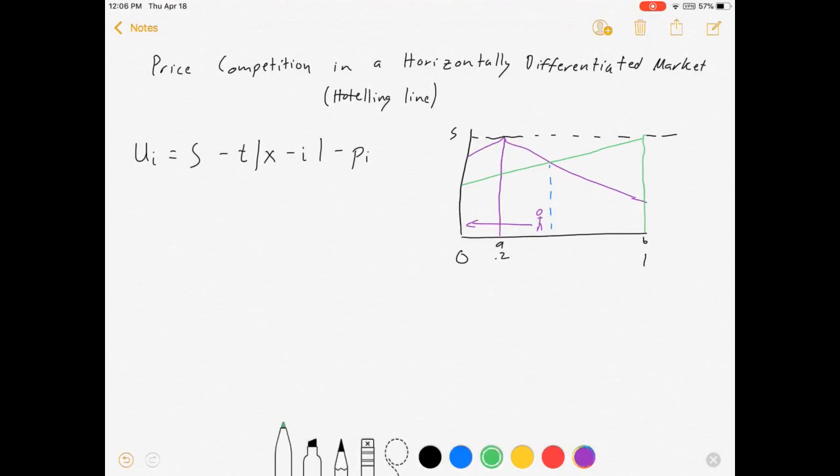Over here, it's the opposite. People on this side of the line, utility on the green line is higher than on the purple line, and all these people are going to buy from firm B.